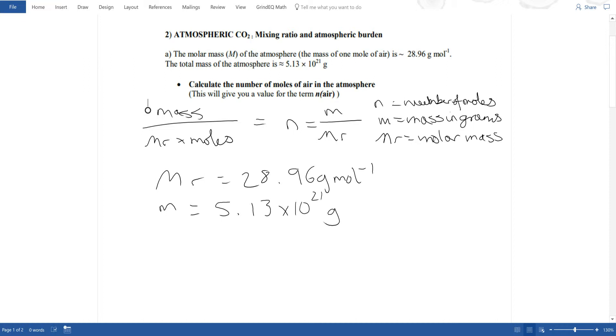Therefore, I need to do the mass, 5.13 times 10 to the 21, divided by the molar mass, which is 28.96, and this will give me the number of moles, which is about 1.77 times 10 to the power of 20. And this is the term n air.